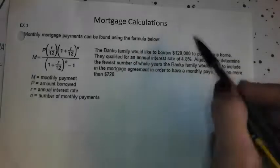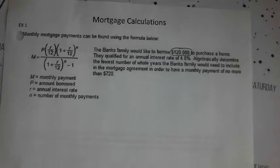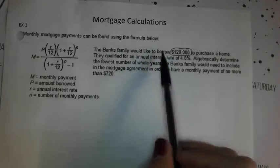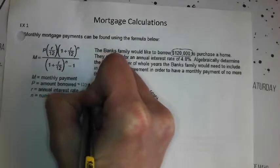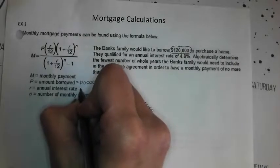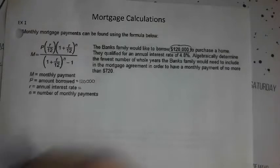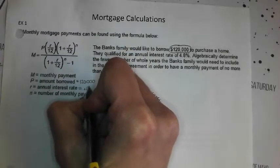So the Banks family would like to borrow $120,000. What variable does that stand for, Evan? Is that the monthly payment? Are they making a monthly payment of $120,000? They better be the Kardashians if they are. What did you say? Yes, good. $120,000. They qualified for an annual interest rate of 4.8 percent, Cameron. What's that? Okay, so you're going to plug in 4.8 for R? You sure? Yeah, not 0.48 because that would be 48 percent. 0.048. Good.